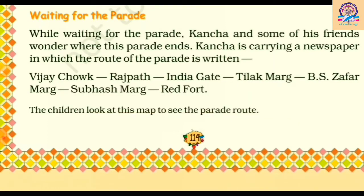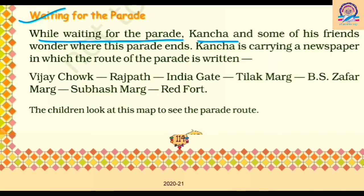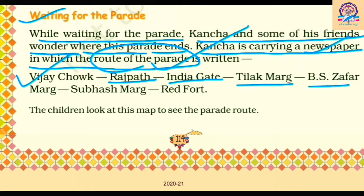For map three, some instructions are given. Let's read them. While waiting for the parade, Kancha and some of his friends wonder where the parade ends. Kancha is carrying a newspaper in which the route of the parade is written. From the newspaper, they find that the parade starts at Vijay Chowk, then visits Rajpath, then India Gate, then Tilak Marg, then B.S. Jafar Marg, then Subhas Marg, and finally ends at Red Fort.